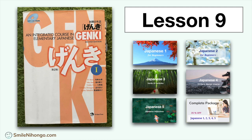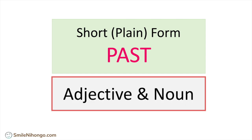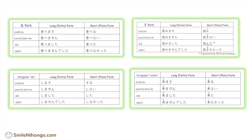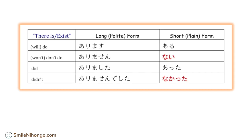Let's begin the lesson. We have learned short past form, or plain past form, for Japanese verbs in the last lesson. Now let's learn plain past for adjectives and nouns. So this is what we have learned so far — the conjugation for Japanese plain verbs. Just be careful with this particular one.